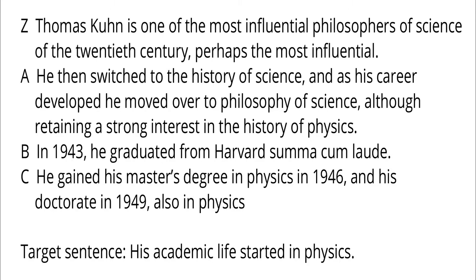Thomas Kuhn is one of the most influential philosophers of science of the 20th century, perhaps the most influential. He then switched to the history of science, and as his career developed he moved over to philosophy of science, although retaining a strong interest in the history of physics.